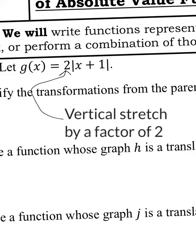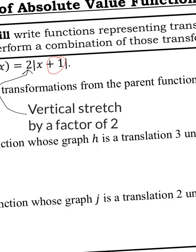Next, I need to identify what this plus 1 is doing. That plus 1 is on the inside of the absolute value bar, so it's inside the function, which means it's either going to move left or right. Plus goes to the left, minus goes to the right. So this goes left one unit.